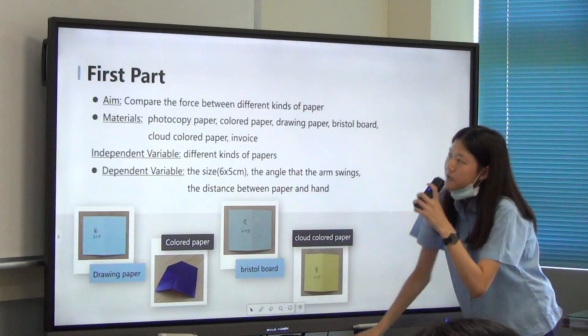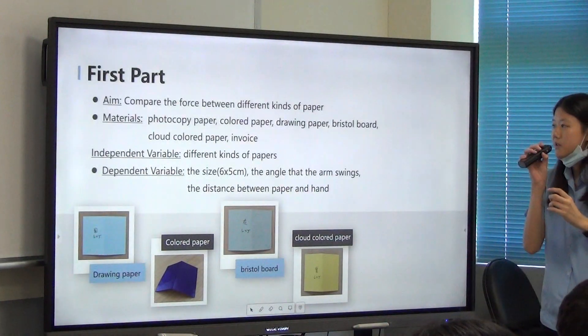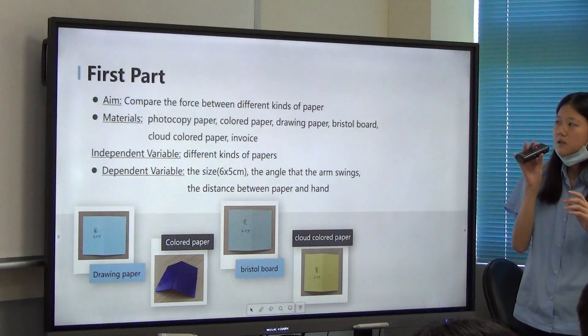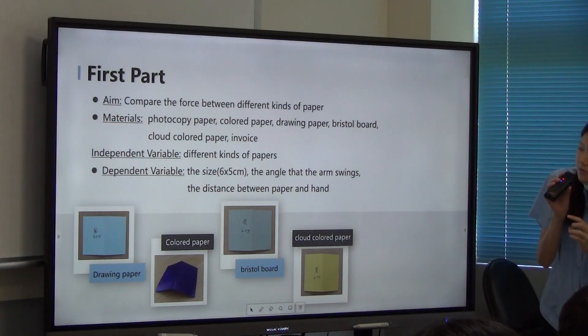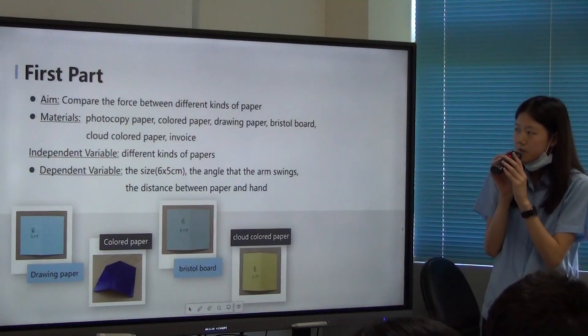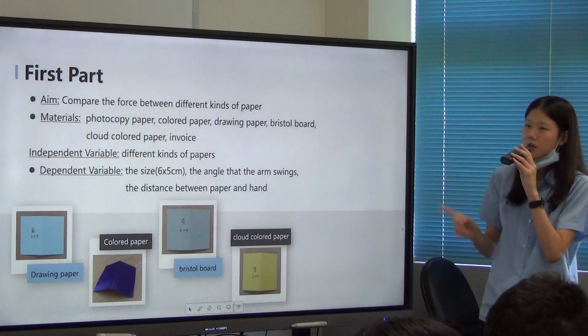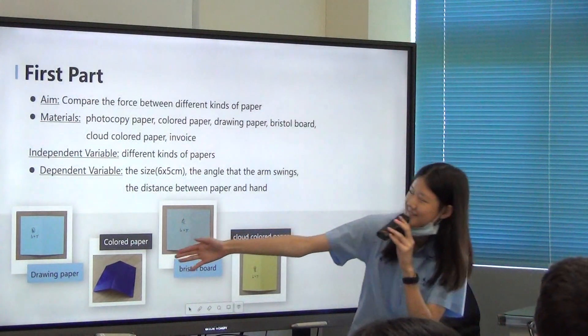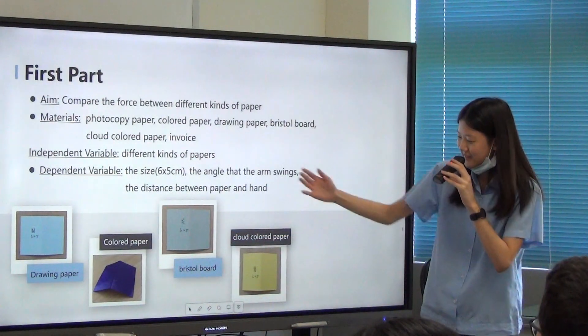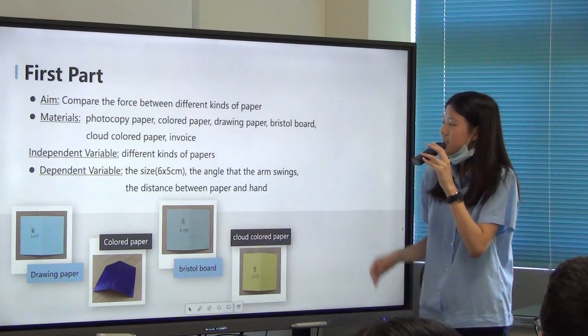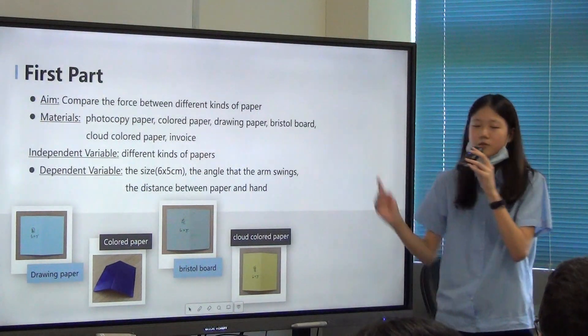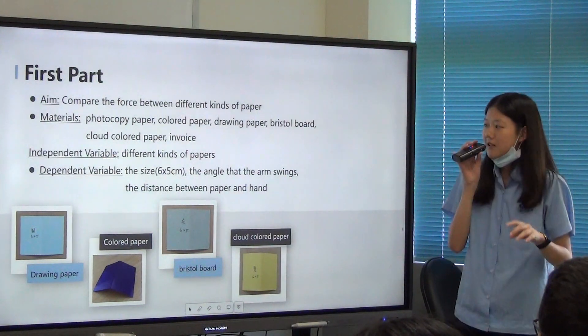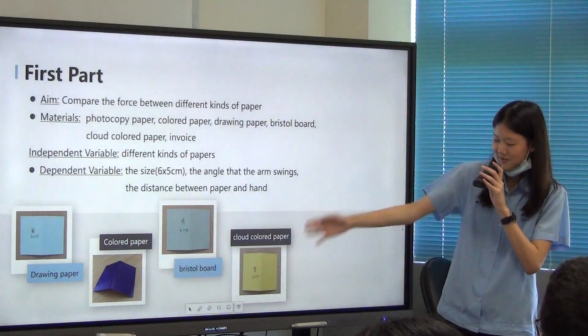So for the first comparison of this experiment, we compared the force between different kinds of paper. We used five different types of papers: photocopy paper, color paper, drawing paper, and cloud-colored paper.